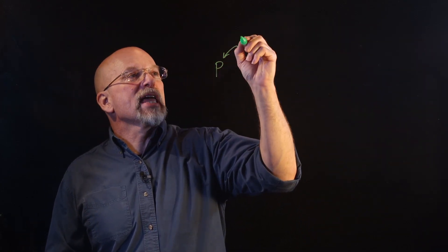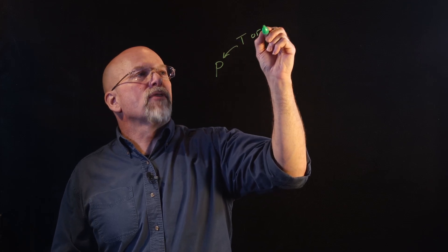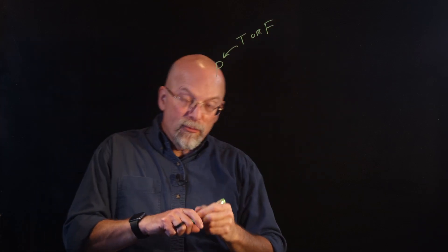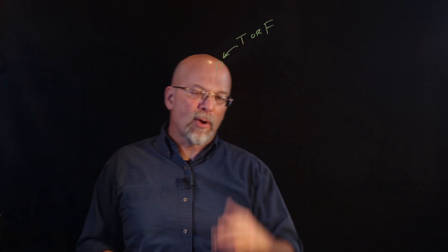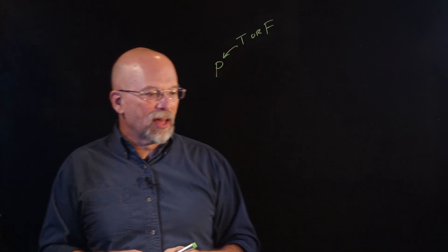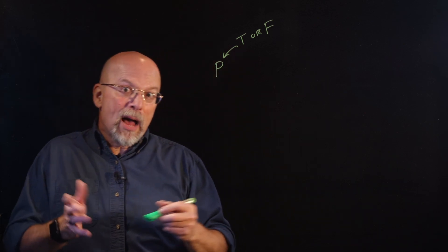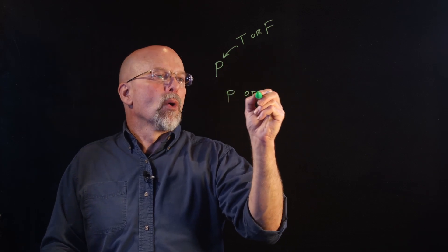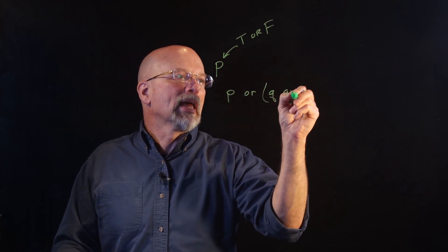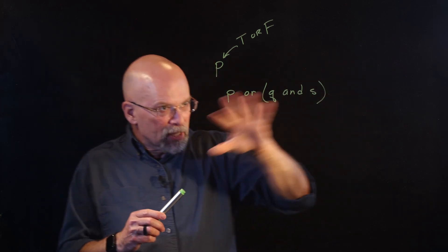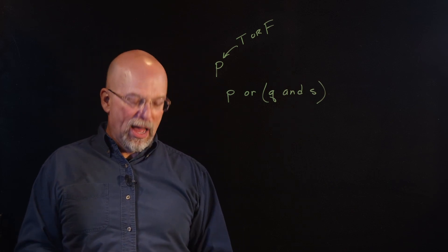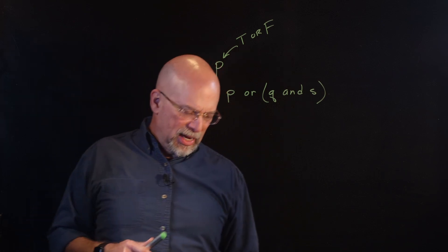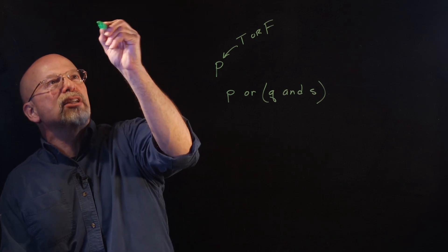Remember, we're talking about propositions P, which can take on values of true or false — nothing else. For each possible proposition addressed in our compound propositions, we only have two possible values. These compound statements, like 'P or Q and S,' have propositions that can each take on two values. The easiest way to organize these is something called a truth table.